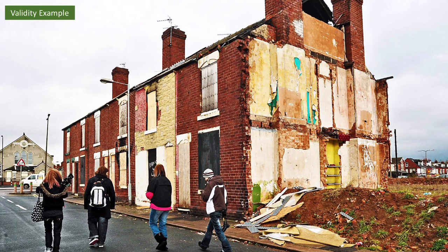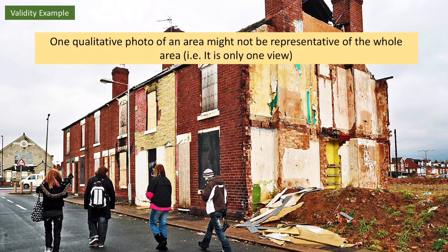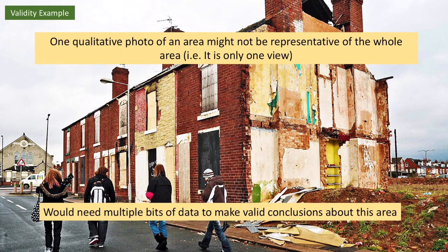Another example: if I take a snapshot of a derelict street to use as part of an environmental quality survey or for field sketch annotations, I have to make sure that photograph is representative of the whole area. It might be just one view — and we can see in the distance that the housing over there looks a lot better. So this photograph might not be representative of the whole area, meaning the data wouldn't be very valid.